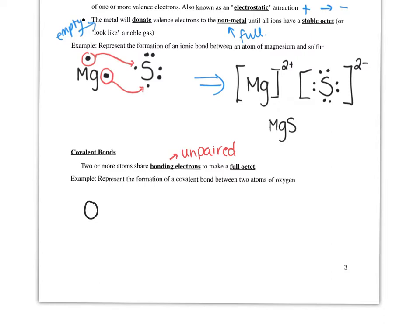Let's represent the formation of a covalent bond between two atoms of oxygen. Oxygen has six valence electrons. So I'm going to draw two atoms of oxygen with my two paired and two unpaired electrons. I've drawn them particularly to make it easier to show our sharing.